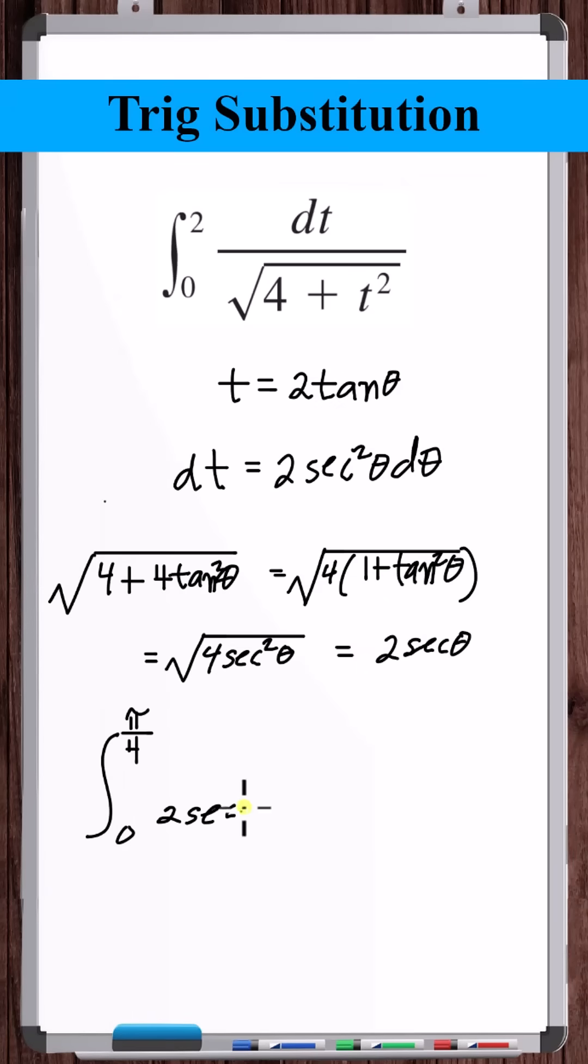The square root of 4 plus t squared is 2 secant theta. dt is equal to 2 secant squared theta d theta. Simplifying, we've transformed the original definite integral into this definite integral.